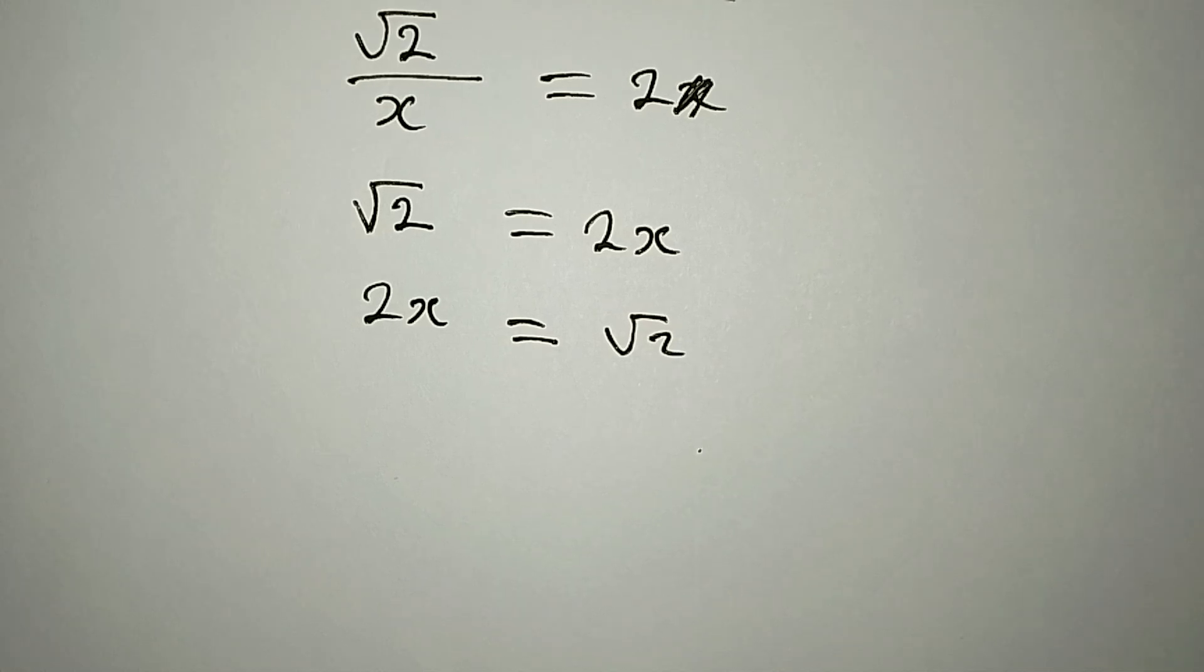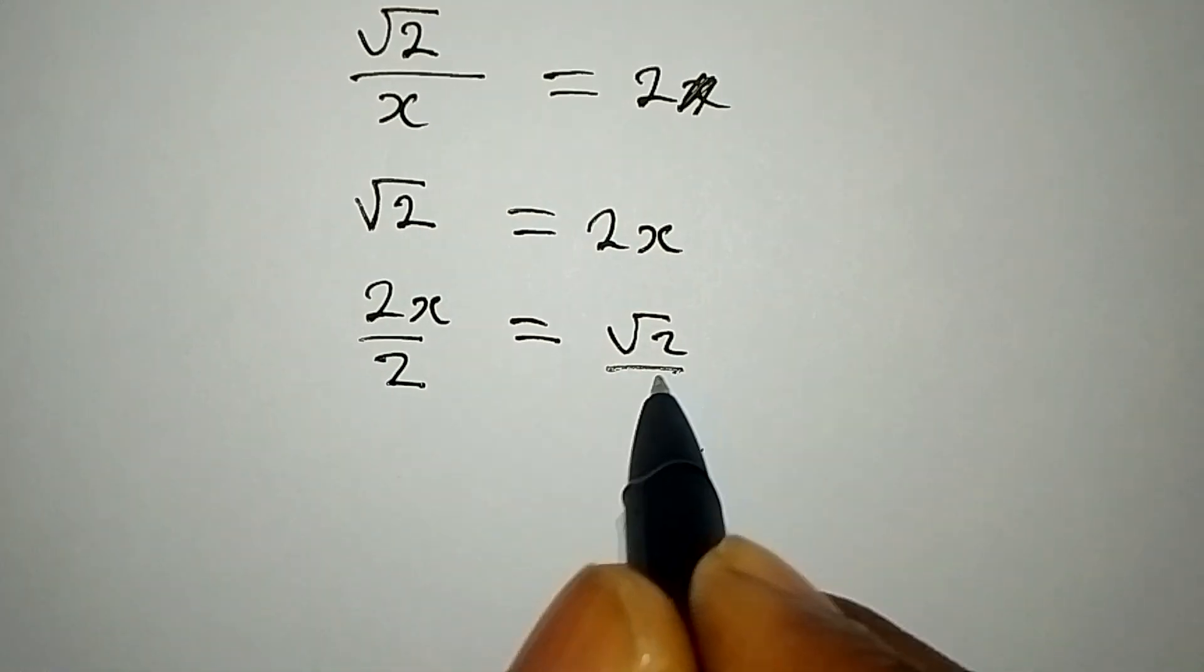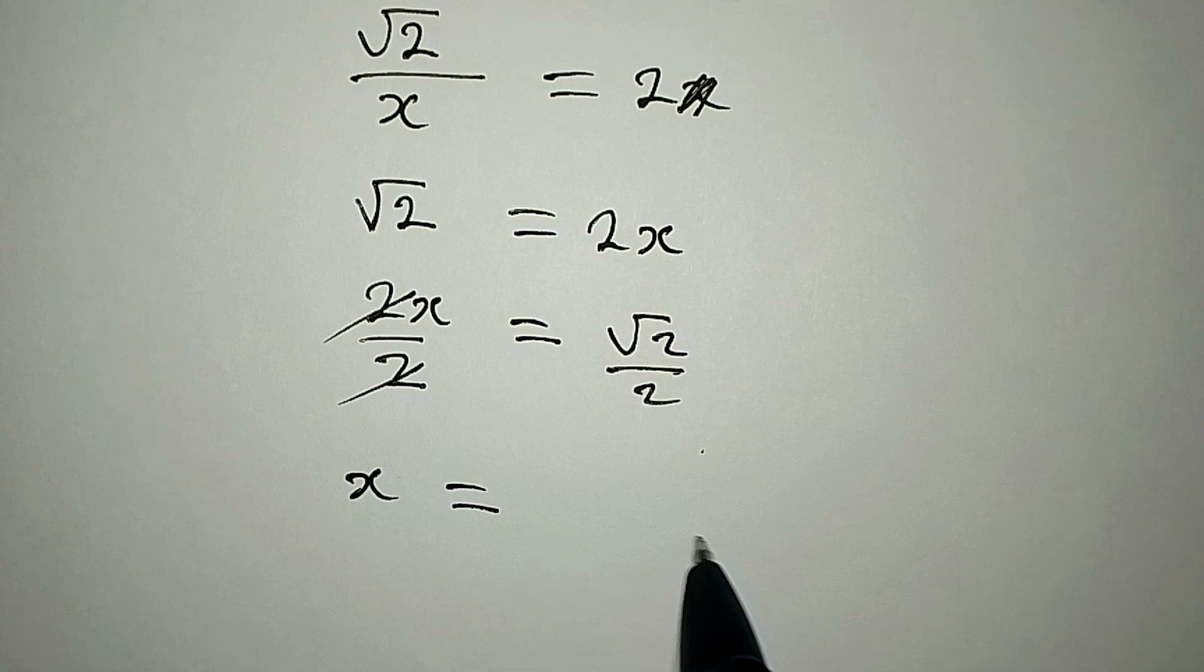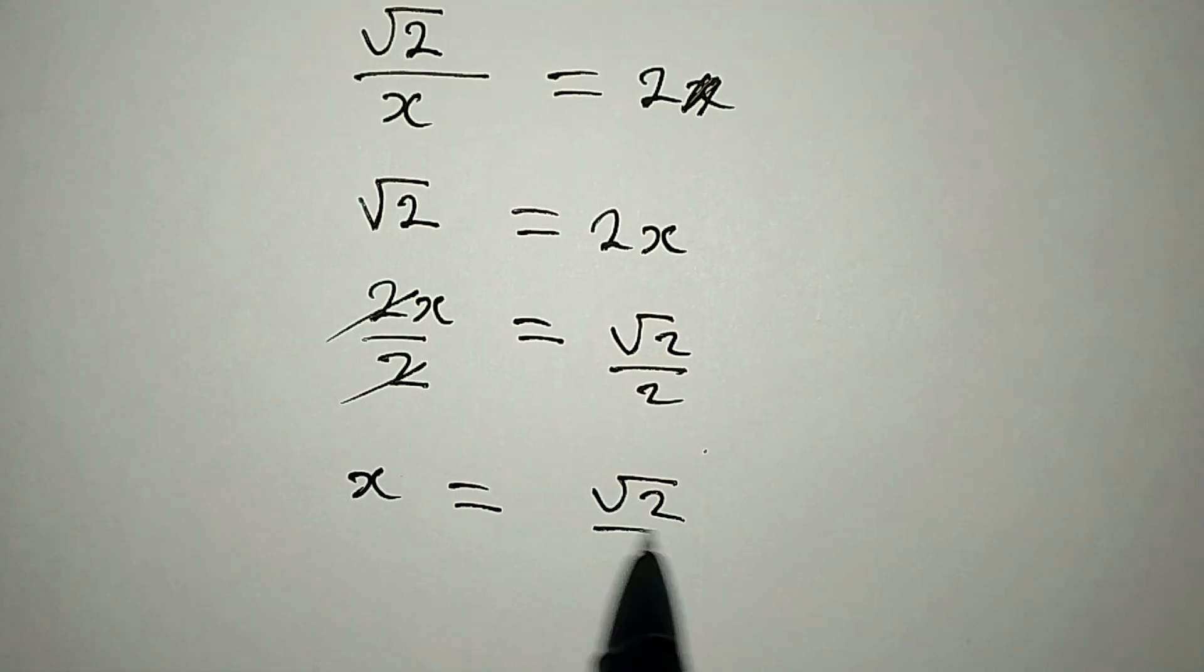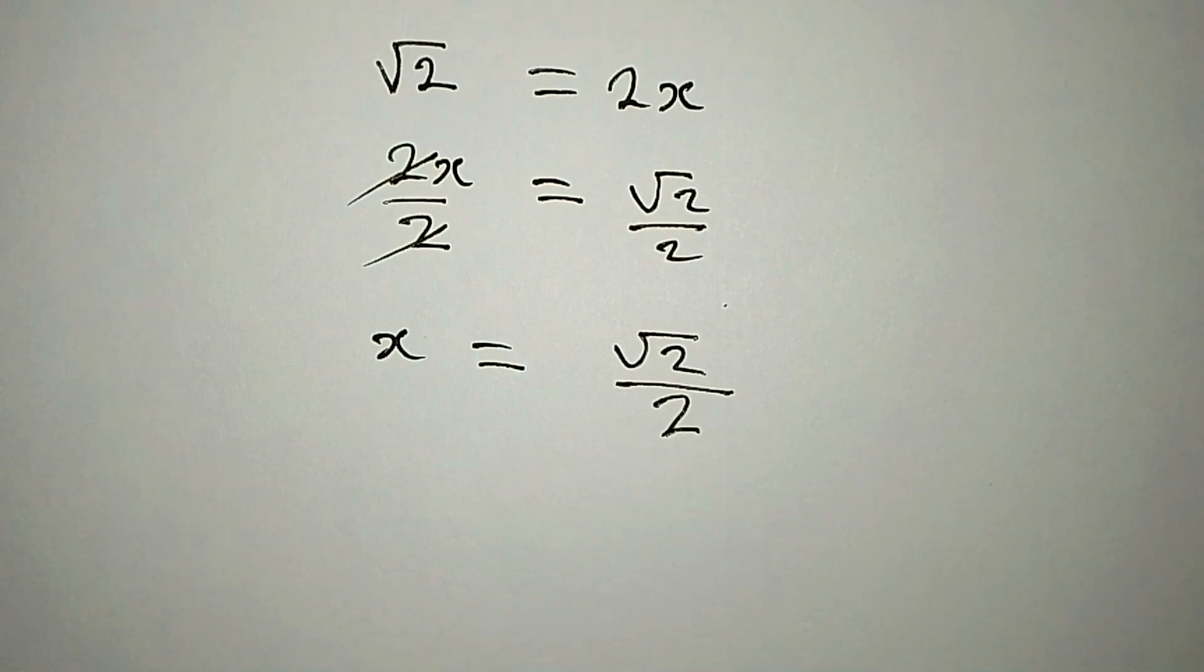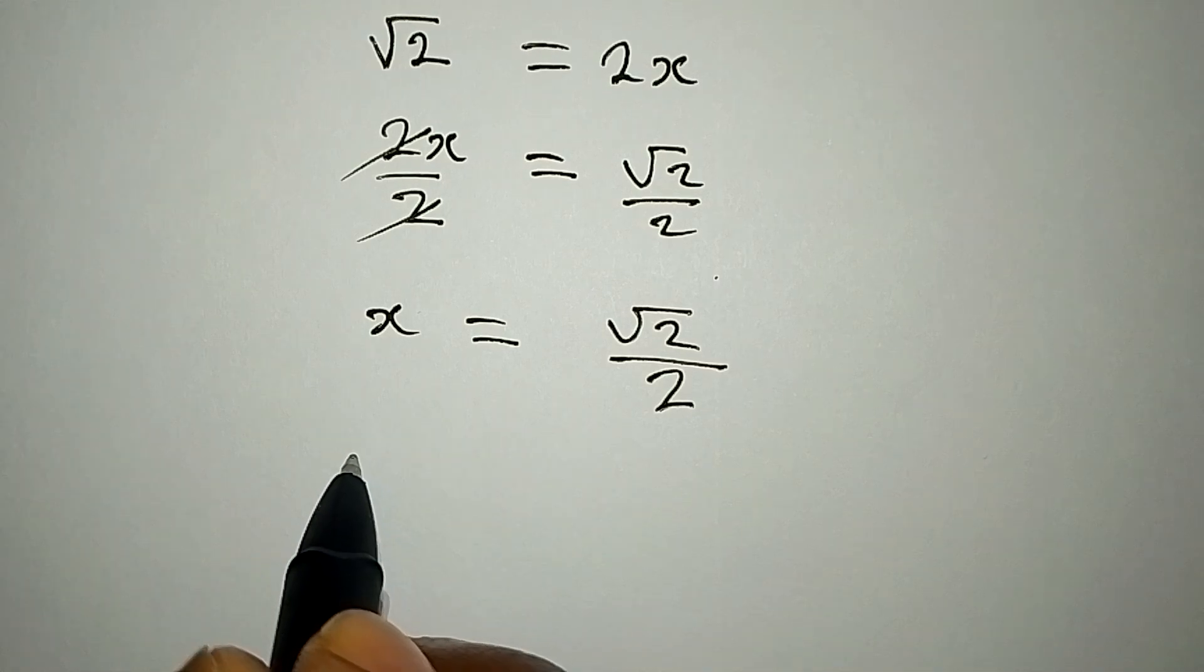And again, what should we do? Remember we are looking for the value of x, and we will just divide both sides by 2 so that we have this over 2 and then this over 2, so that this will go and x is equal to square root of 2 over 2. Remember that these two cannot cancel, but if you want to combine them you can have it this way.